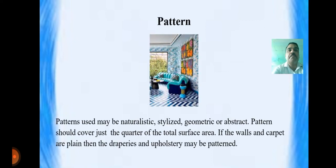The next element is pattern. Patterns used may be naturalistic, stylized, geometric, and abstract. Pattern should cover just a quarter of the total surface area. If the wall surface and carpet are plain, then the drapes and upholstery may be patterned.